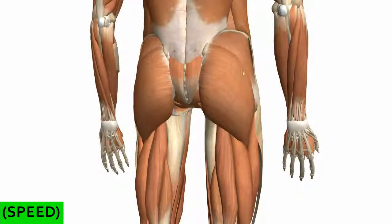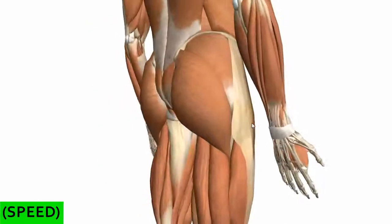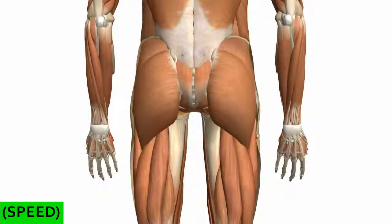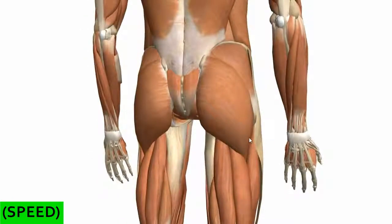The gluteal region is this region here between the iliac crest and the gluteal fold — the folds of the buttock. It's helpful to think of the gluteal region in terms of deep and superficial muscles. The deep muscles are small and are mainly lateral rotators of the hip, and then you've got the large powerful superficial group, which are mainly extensors and abductors of the femur at the hip.